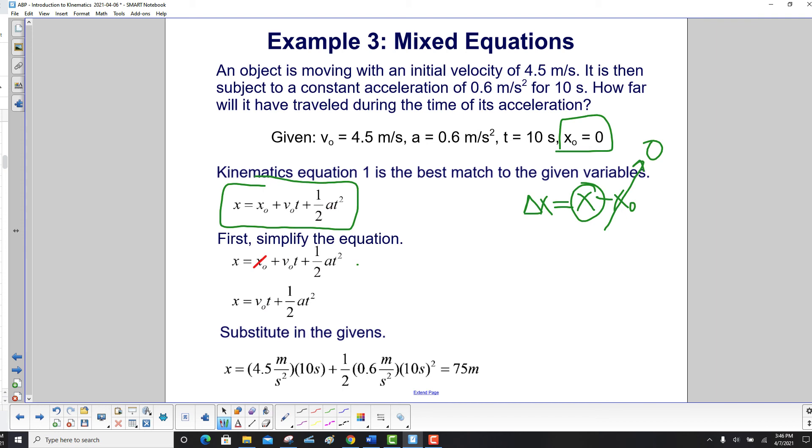So the first thing you do is simplify the equation. x zero is equal to zero, so you drop it out. So x, which is going to represent your displacement, is v zero t plus one half a t squared.